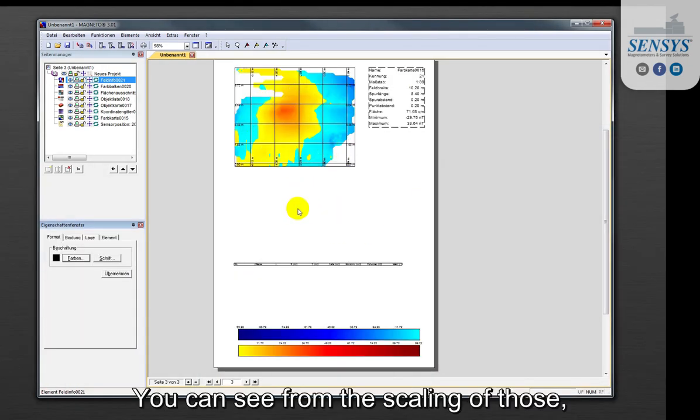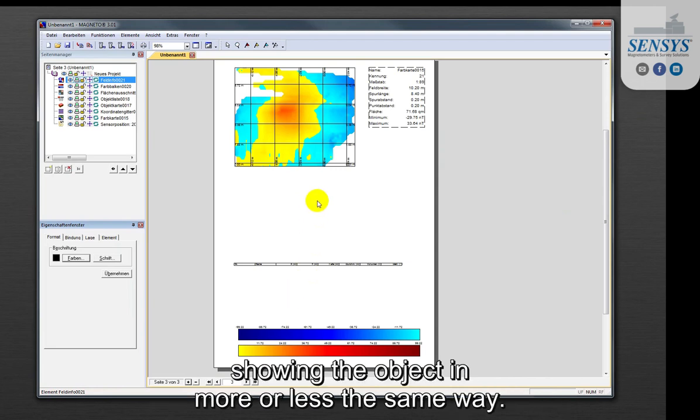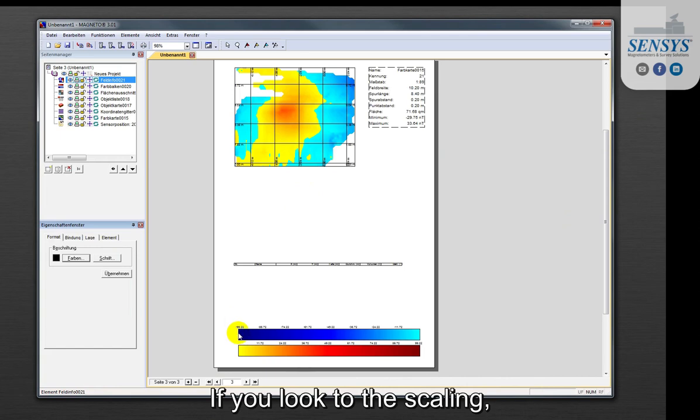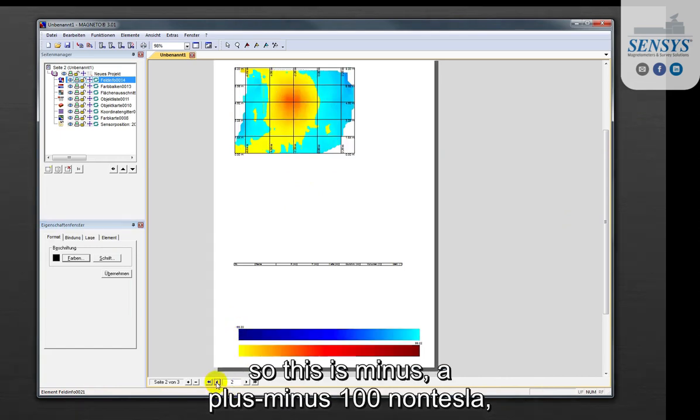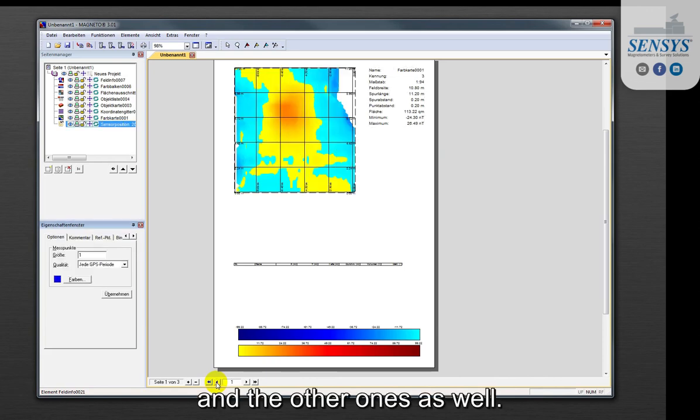You can see from the scaling, all those showing the object in the more or less same way. If you look to the scaling, so this is plus and minus 100 nanotesla, and the other ones as well.